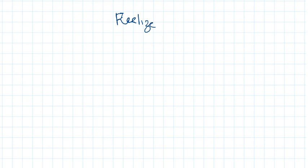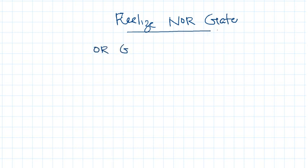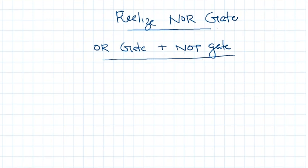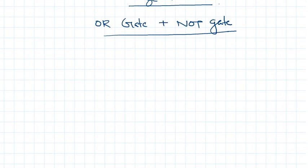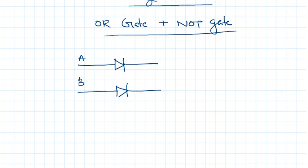How to realize an OR gate. You know that an OR gate plus an OR gate is an OR gate. So this is my OR gate — simply this is my A, B OR gate given to an OR gate, and this is simply an OR gate.